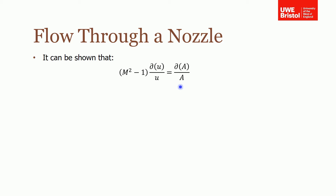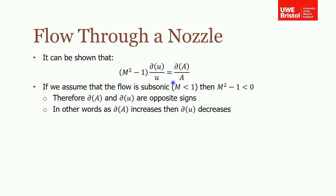We'll consider what-if scenarios by varying Mach number. For subsonic flow where M is less than one, M squared is less than one, so M squared minus one is negative. This means the change in velocity and change in area have opposite signs — as area decreases, velocity increases. This is what we expect and is consistent with nozzle behaviour for subsonic flow.